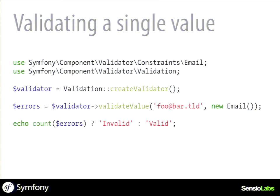With this validator object, you can validate data using the validateValue method. You give it the value you want to validate — in this case, an email address — and validate it against a constraint. A constraint in Symfony is an object: you instantiate the Email class, which is the email constraint. The validateValue method returns a ConstraintViolationList object, which is an iterable object. You can count on this object — if the violation list contains at least one violation, your value is not valid. If the violation list is empty, your value is valid.